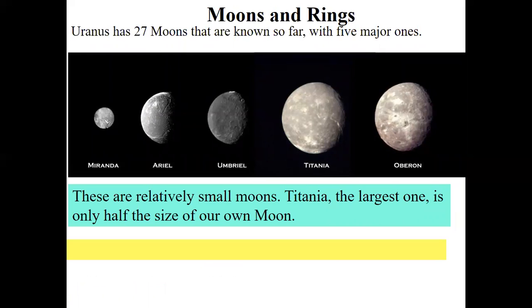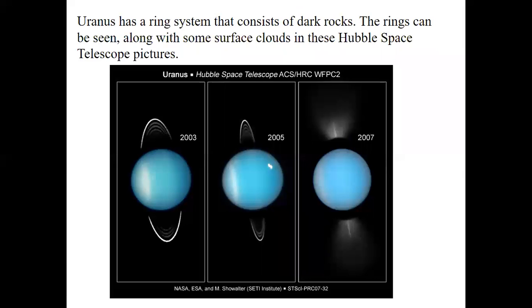Moons and rings. Uranus has 27 moons that are known so far with five major ones. Miranda, Ariel, Umbriel, Titania, and Oberon. Those are the five major ones, but there are 27 moons for Uranus as we know. These are relatively small moons. Titania, the largest one, is only half the size of our moon.